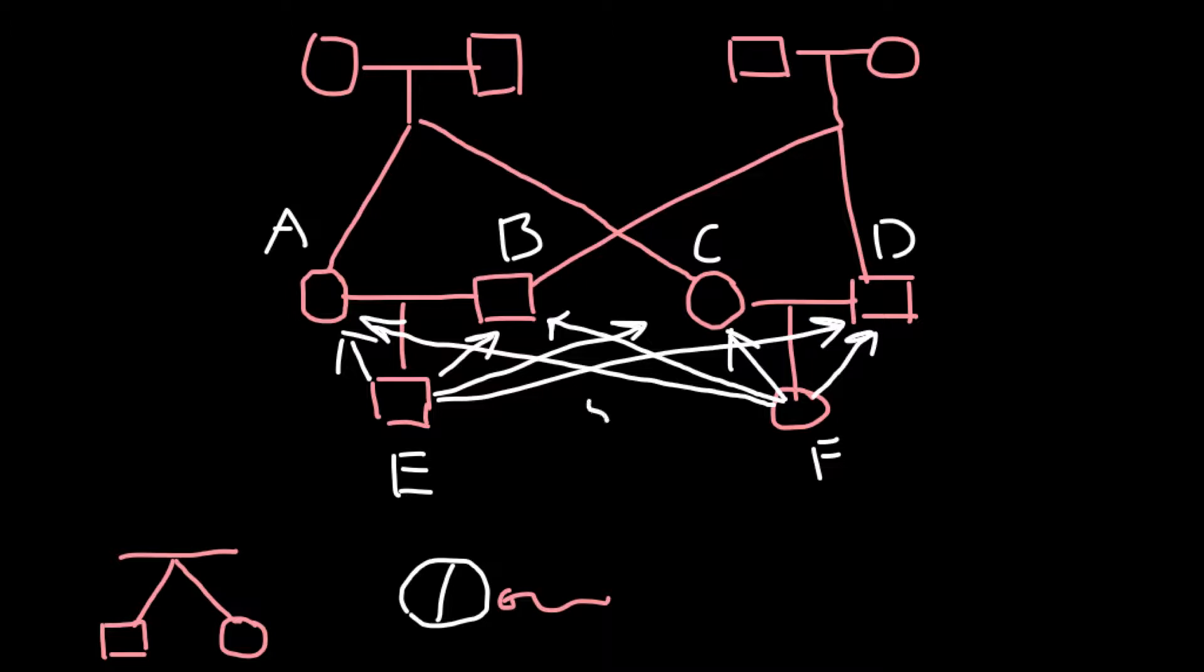So all these lines represent 50% of relatedness, and they would be 50% related to each other just like full siblings in one family.